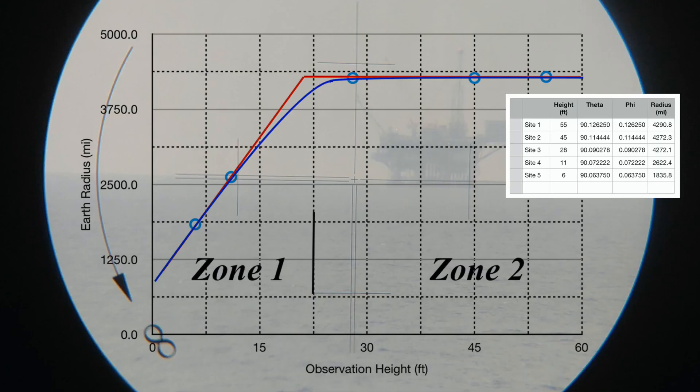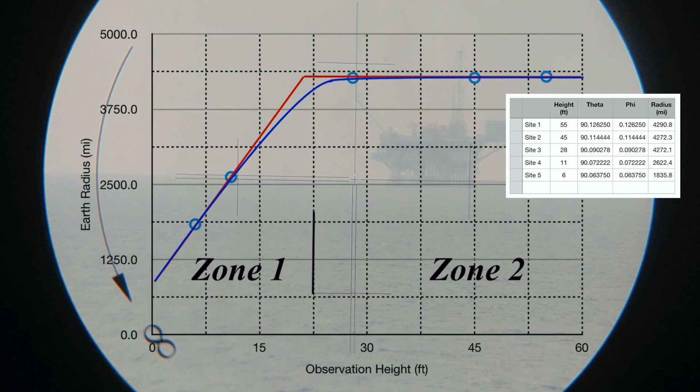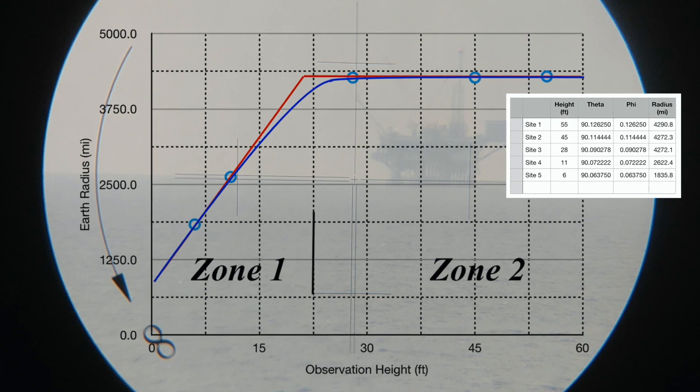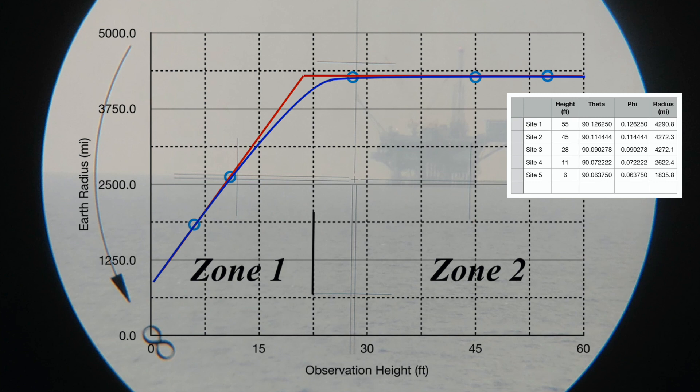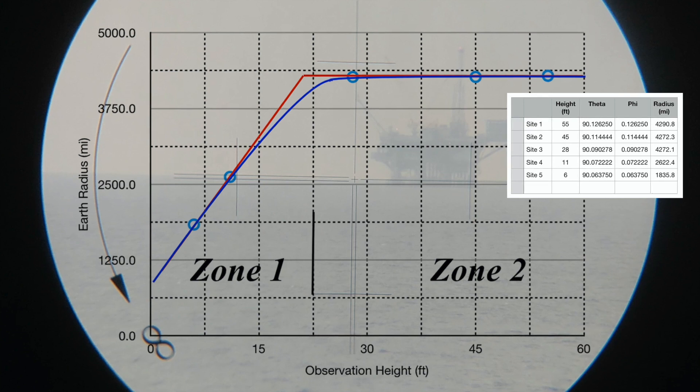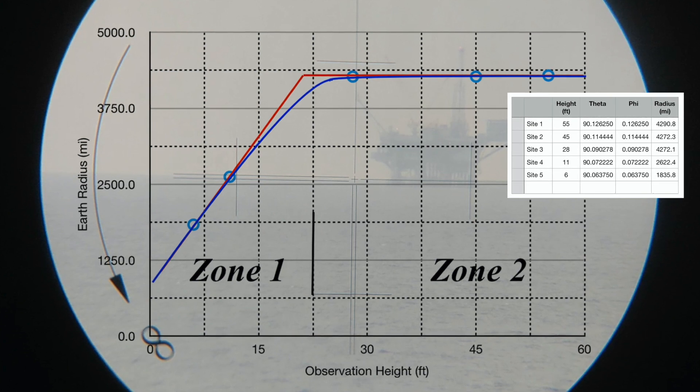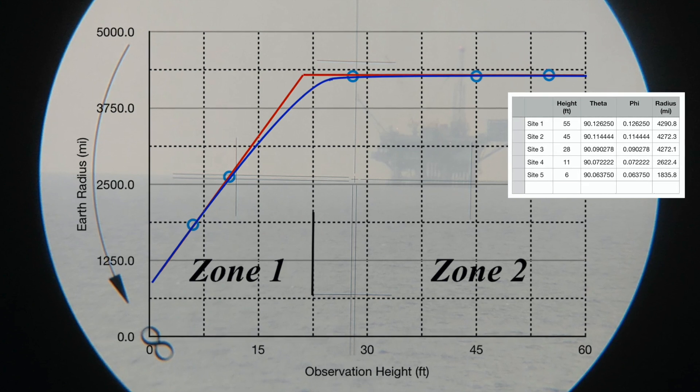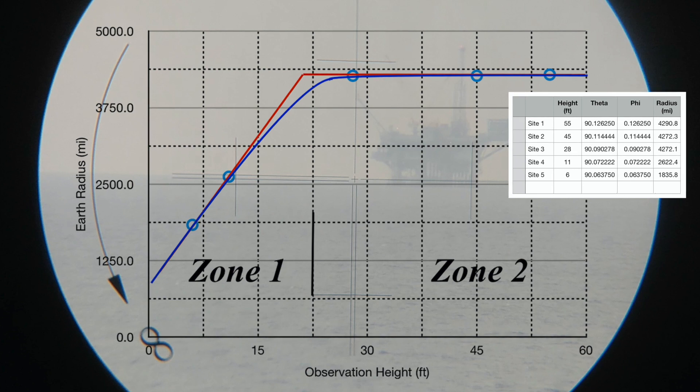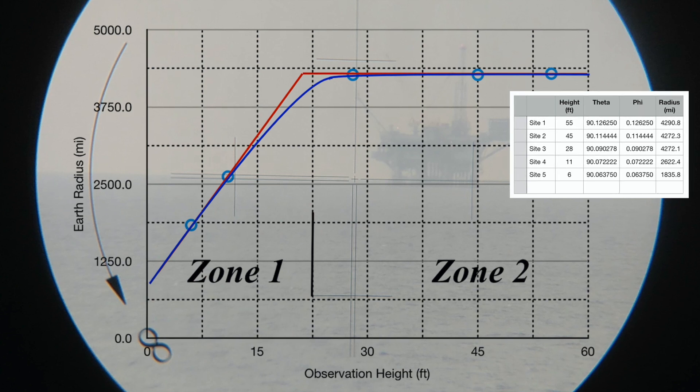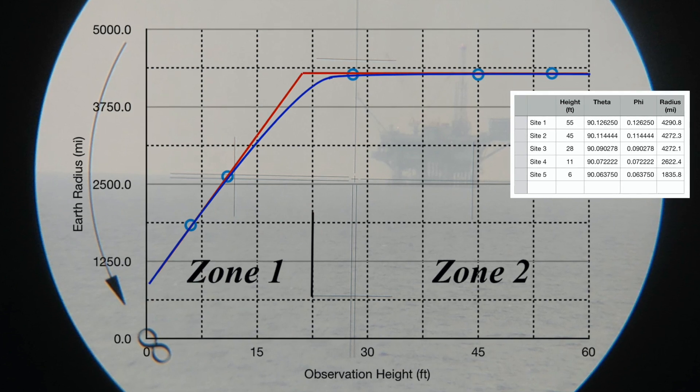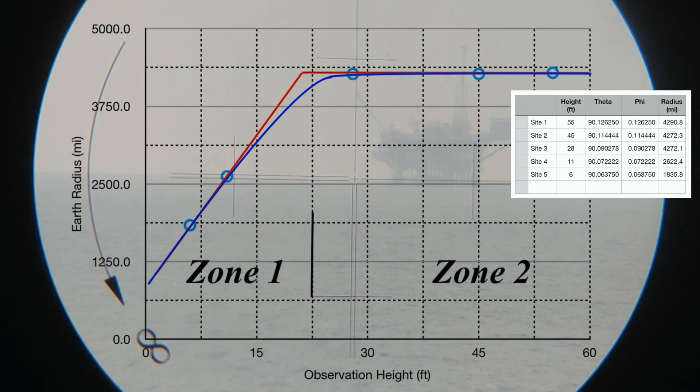Now, regardless of what we imagine is happening to the light as it propagates, this is the result we've measured. It appears we're converging on a radius of curvature of about 4,300 miles. We can be certain there is still refraction occurring at the higher altitudes like Site 1. Look at the phi angle, that's in degrees: 0.126. Wow, that's a very small angle. So we're still experiencing refraction, folks.